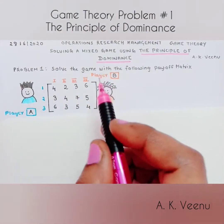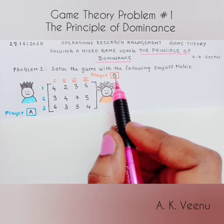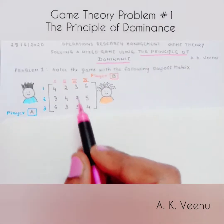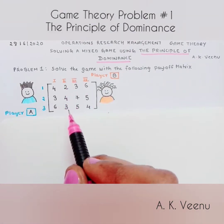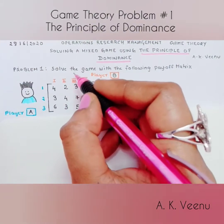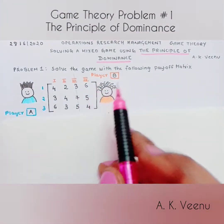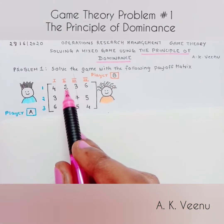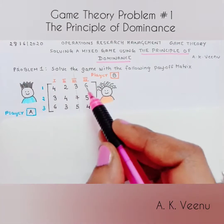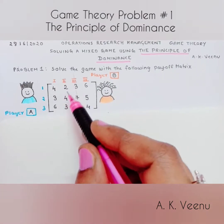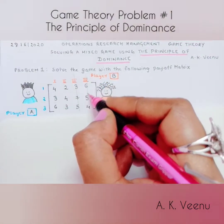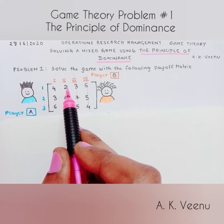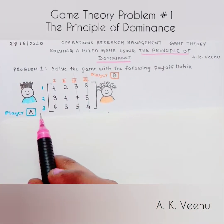Let's begin by finding the dominant column of player B. When we consider columns 2 and 3, we find that the elements of column 3 are greater than column 2, therefore we cancel out column 3 — because the idea is to minimize the losses of player B. Now comparing the second and fourth columns, the elements of the fourth column are greater than the second, so we cancel out the fourth column. Player B is left with columns 1 and 2.